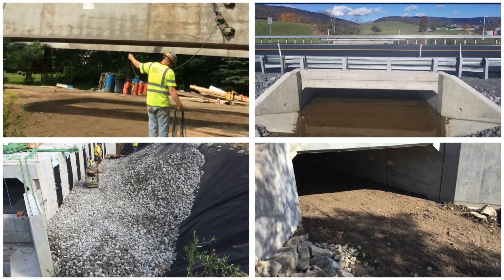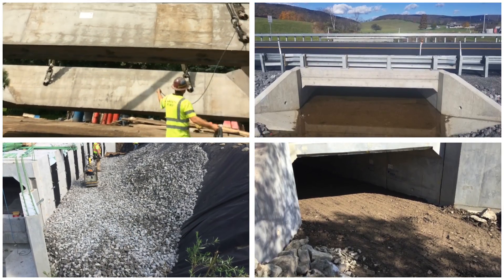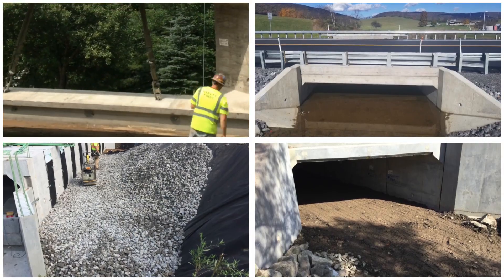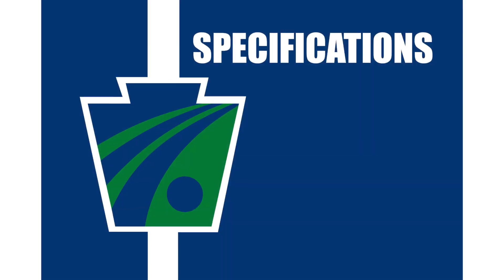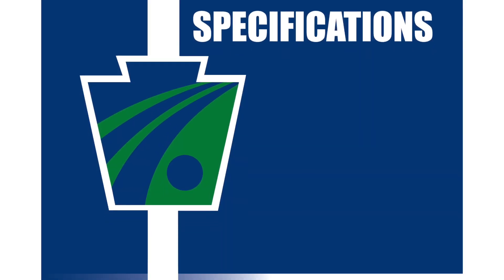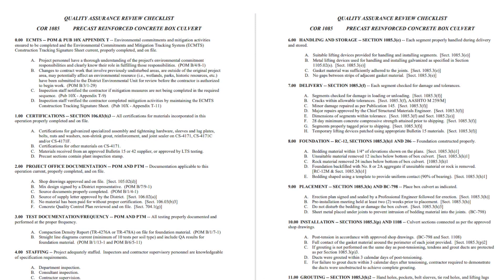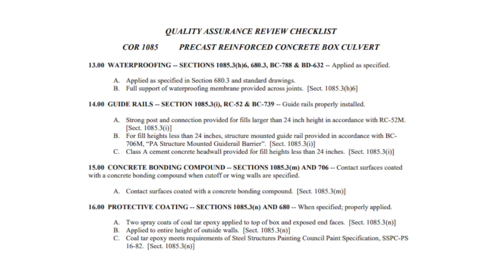This video discusses the important activities required to successfully install and construct a precast reinforced concrete box culvert. Refer to Publication 408 Section 1085 and Appendix A of the Project Office Manual for the Quality Assurance Reporting System Checklist COR 1085 for the construction and documentation of a precast reinforced concrete box culvert.